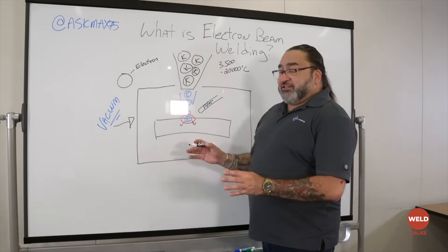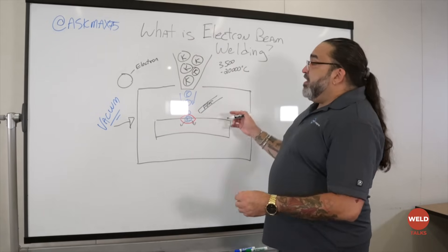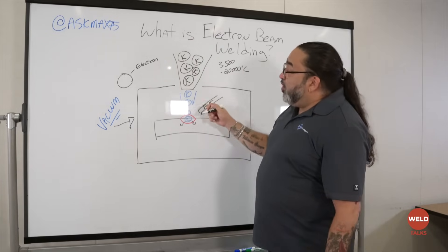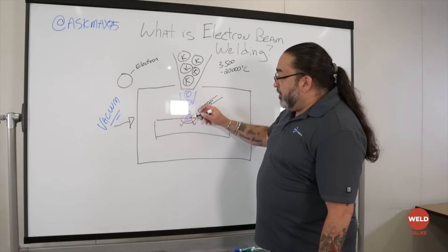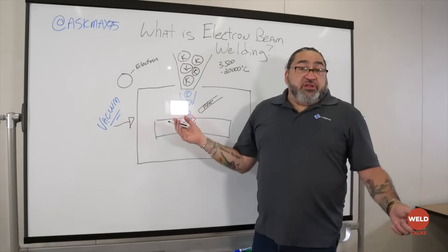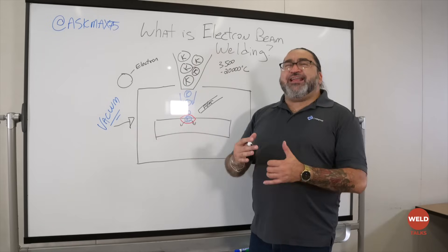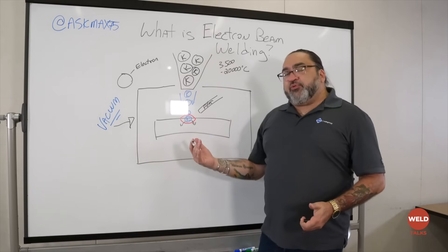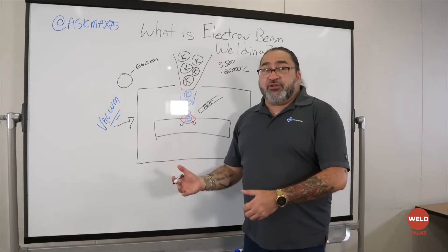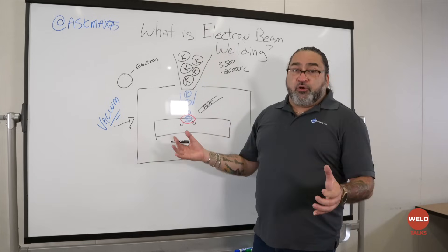Now what are the drawbacks of this? Well right off the top, there can't be anything in the way of the path of that electron from here to here. Now what could be in the way? Well the atmosphere. Anything. It's not like other welding processes where you put an inert gas there to keep the oxygen away. Even the inert gas would be a problem.